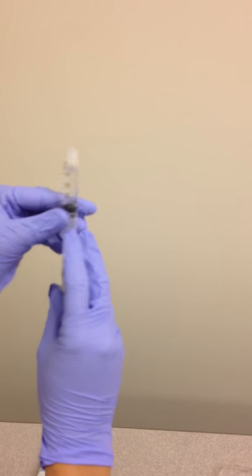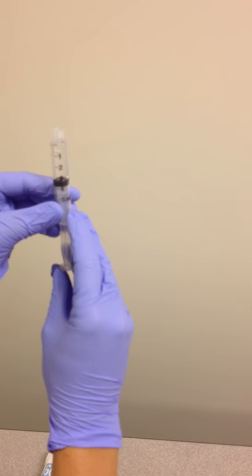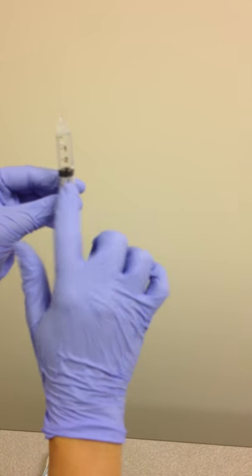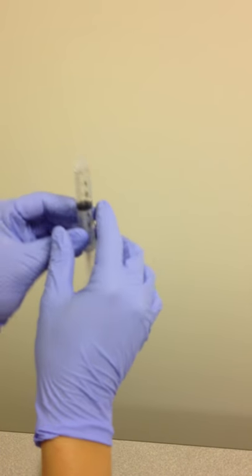For our burette, we will not need a needle, so we can discard that in the sharps container. Make sure all the air is out of our syringe, and as you see, we have three milliliters.